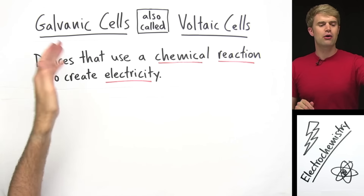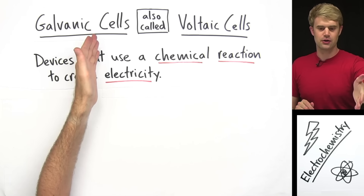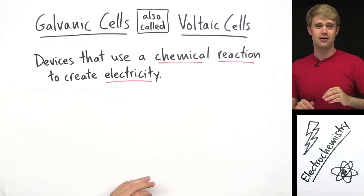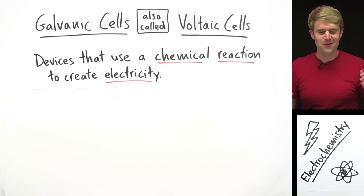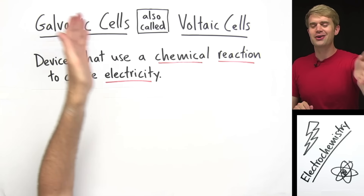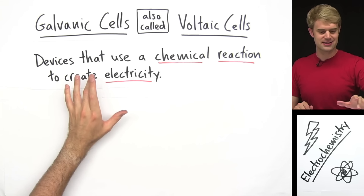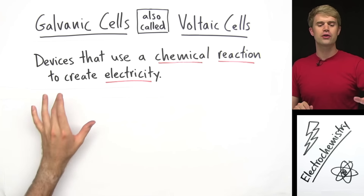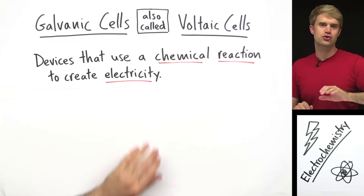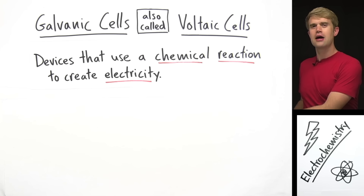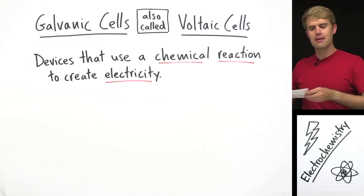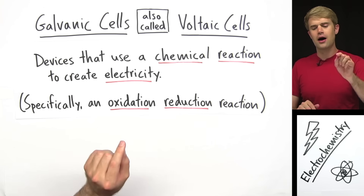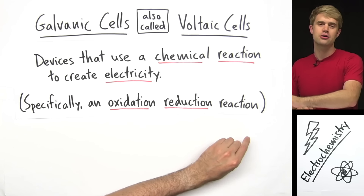In this video we're going to talk about galvanic cells, which are also called voltaic cells. Galvanic or voltaic cells are devices that use a chemical reaction to create electricity. Specifically, the type of chemical reaction they use is called an oxidation reduction reaction.